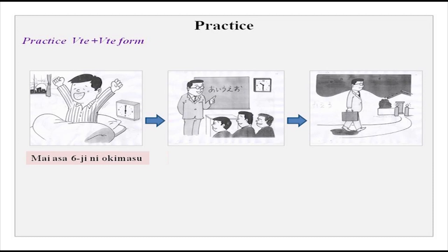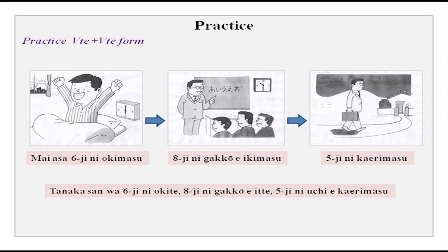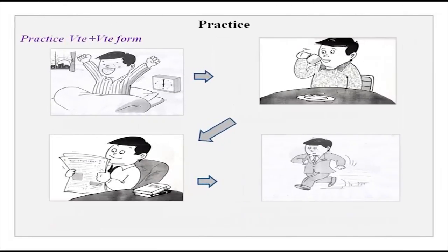Practice again: mai asa roku-ji ni okimasu, hachi-ji ni gakkou e ikimasu, goji ni kaerimasu. So, Tanaka-san wa roku-ji ni okite, hachi-ji ni gakkou e ikite, goji ni uchi e kaerimasu. Or more fully: Tanaka-san wa mai nichi roku-ji ni okite, asa hachi-ji ni gakkou e ikite, gakusei ni nihongo wo oshiete, goji ni uchi e kaerimasu. You can keep adding but not more than two or three te-forms; then complete the sentence with the final masu-form.